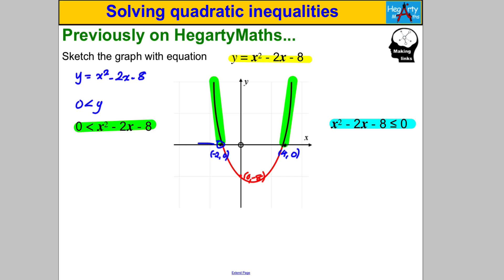We're trying to find which x-values make y > 0. Those are all the values to the left and all the values to the right of the roots. So we can say x < -2 and x > 4. Because we have a strict inequality, we use strict inequalities in both parts of the answer.